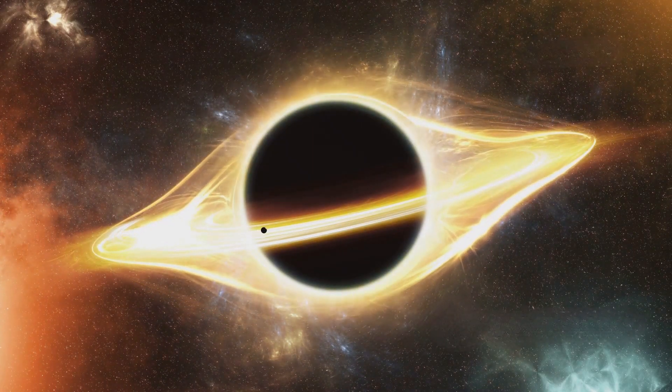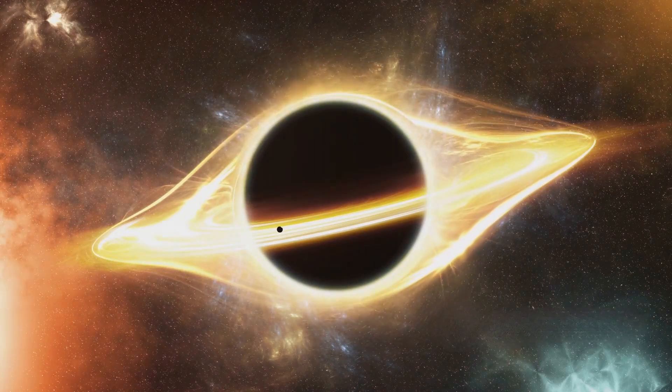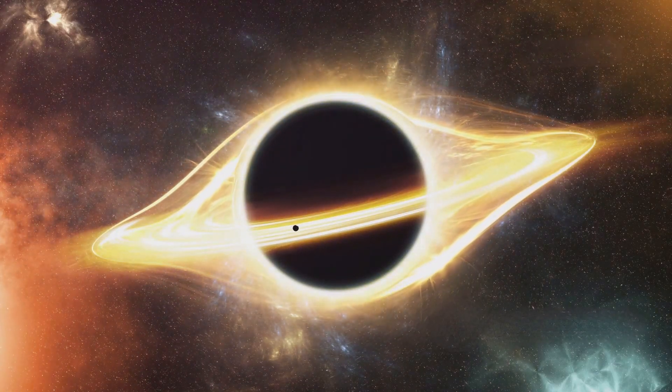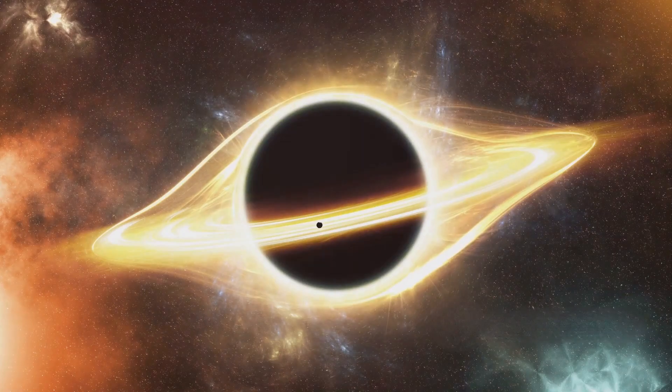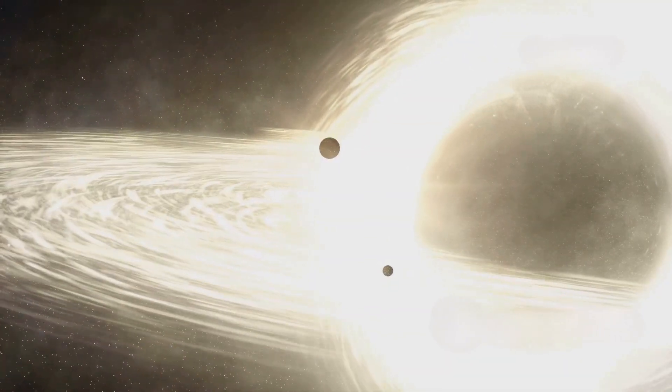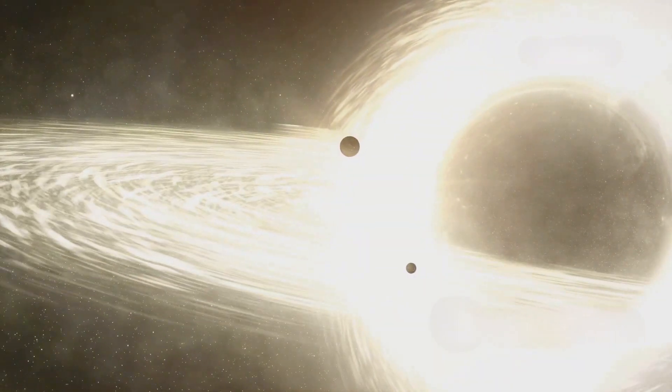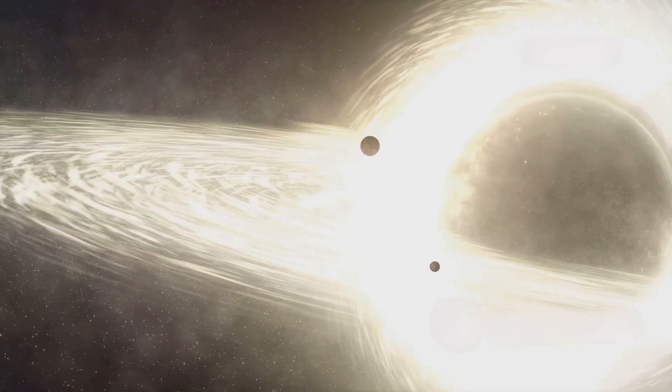The gravitational pull of a black hole is so immense that it bends the path of light, allowing it to capture everything that ventures too close, including stars, gas, dust, and even light itself. This boundary, where escape becomes impossible, is known as the event horizon. Crossing this line is like stepping off the edge of the universe.